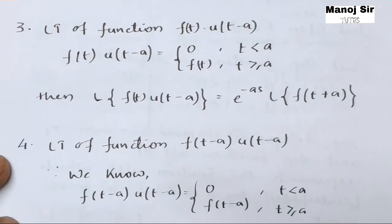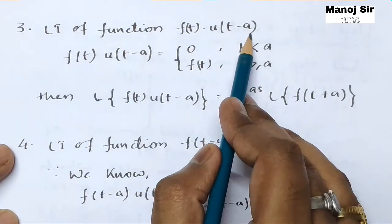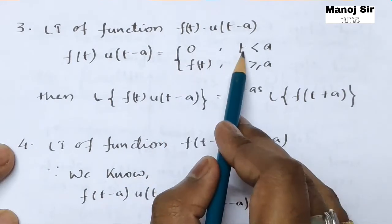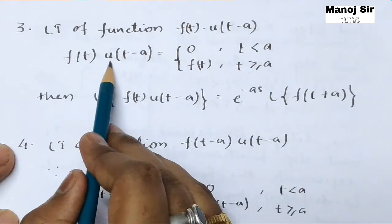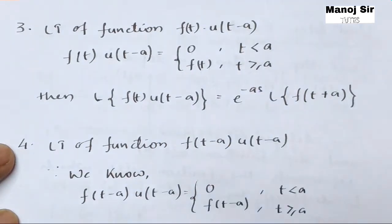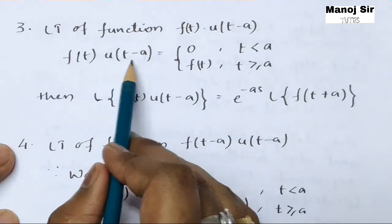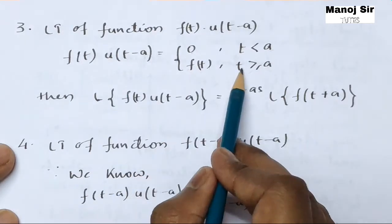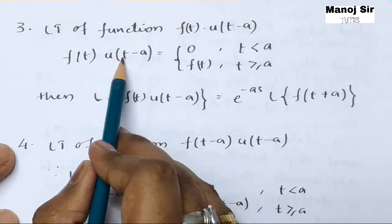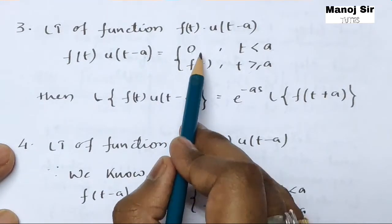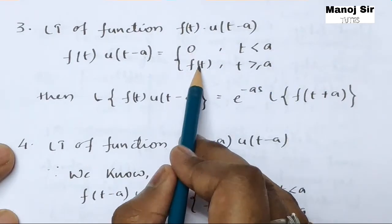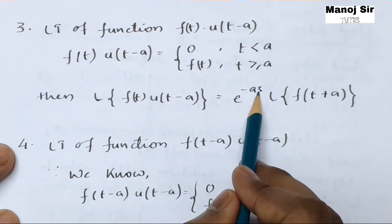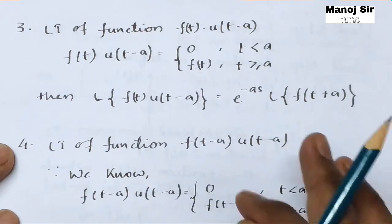Now the third part: the Laplace transform of f(t) into u(t minus a). Since f(t) multiplied by u(t minus a) equals 0 when t is less than a, and equals f(t) when t is greater than or equal to a. This follows because u(t minus a) is 0 when t is less than a and 1 when t is greater than or equal to a; multiplying f(t) by these values gives 0 and f(t) respectively. Therefore the Laplace transform of f(t) into u(t minus a) equals e to the power minus a s into the Laplace transform of f(t plus a).